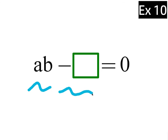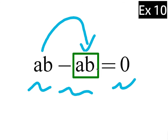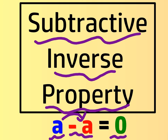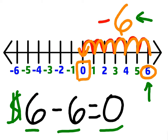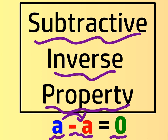It doesn't matter how complicated the expression looks — AB minus itself would give you 0. This is called the subtractive inverse property. A good way to differentiate this from the additive inverse property: with the additive inverse, you add the opposite sign; with the subtractive inverse property, you keep the sign. This simply means that if you take a number and subtract itself, you end up at 0.